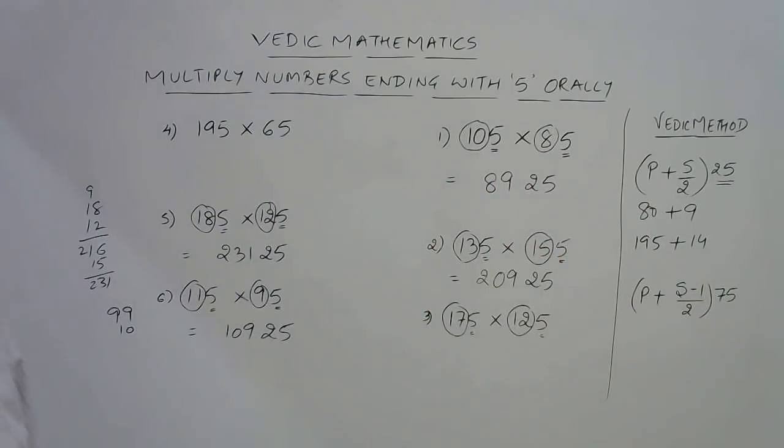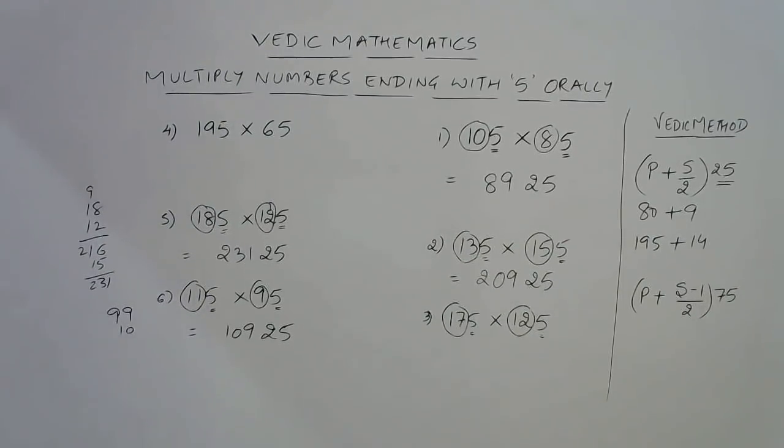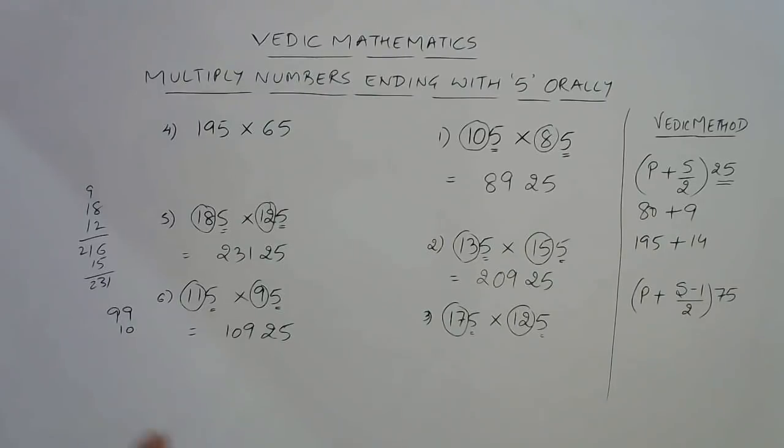I have taken up four questions in which the sum of these two numbers is even. Now let's see two examples in which we will have odd sum.